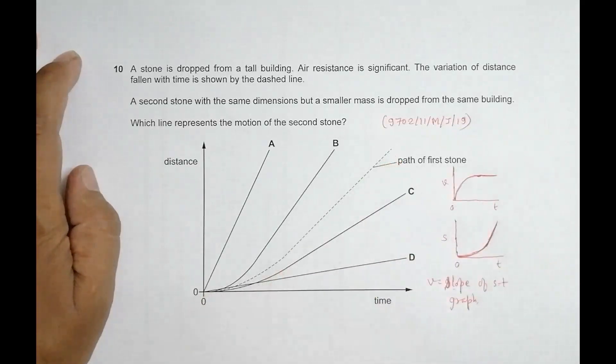Now if we have a second stone of same dimensions but smaller mass, when mass is small, the terminal velocity will be less.